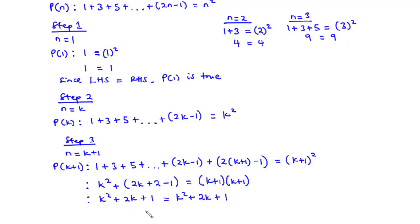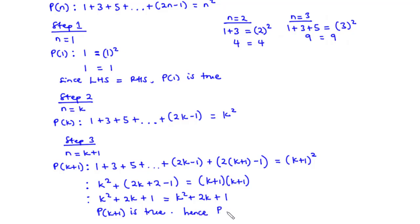Since the left-hand side equals the right-hand side, the statement is true for n equals k + 1. So p(k + 1) is true. Hence, the original statement p(n) is true for all natural numbers.